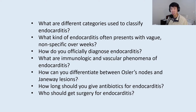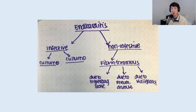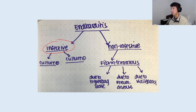These are basically images pulled from Google that I thought were good at explaining the basic foundation for endocarditis. Endocarditis can really be split into two primary categories: infective versus non-infective endocarditis. Within infective endocarditis, you can split it further into culture-positive versus culture-negative endocarditis.